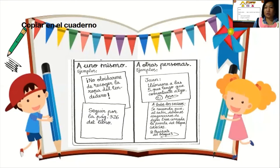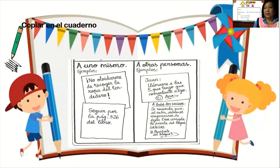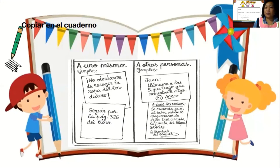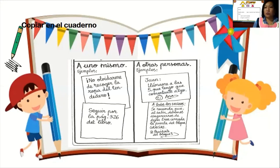También las notas o recados las podemos dirigir a otras personas. Como hemos visto en los ejemplos. Aquí dice: Juan, llámame a las 5 que tengo que comentarte algo. Ana. A todos los vecinos: se recuerda que al salir debemos asegurarnos de dejar bien cerrada la puerta del bloque. Gracias, el presidente del bloque. Son mensajes muy cortitos, muy concisos, muy claros, de entender.